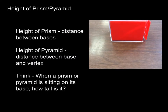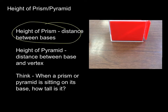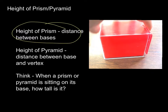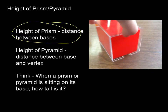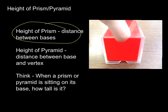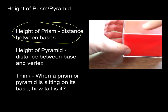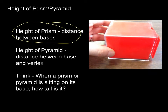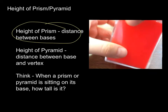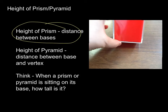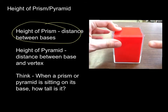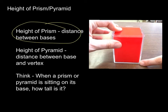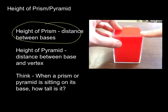The height of a prism is the distance between the bases. So if I have this prism right here, I have base one here and a second base right here. The height is going to be this distance right here between the bases. So think about it: if you stood it up on its base, how tall is it? What is the distance from base to base? That's the height of a prism.